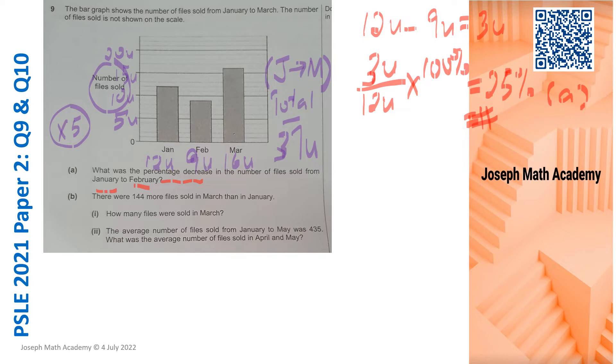Part B. We are told that there were 144 more files sold in March than in January. Let's find the difference between them. In March, 16 units of files sold. In January, 12 units of files sold. So the difference is 4 units and 4 units has to be 144. Let's find what is 1 unit. 144 divided by 4, that gives us the number 36. So 1 unit is equal to 36 files.